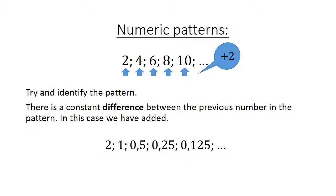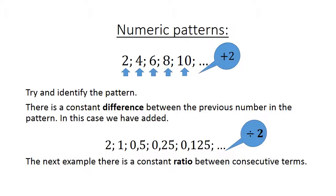If we look at the next pattern 2, 1, 0.5, 0.25, 0.125, what happened here? We divide it by 2. So in this example there is a constant ratio between consecutive terms. The first one you have added and the second one you have divided. When we add or we minus it's a difference, and if we multiply or we divide it's referred to as a ratio.